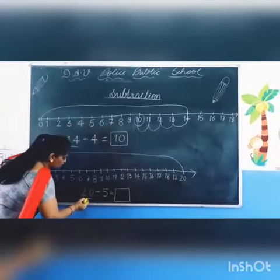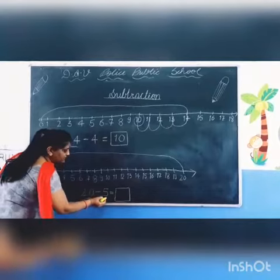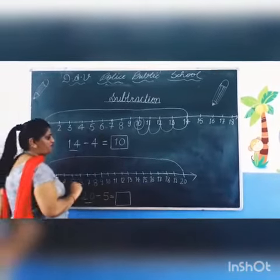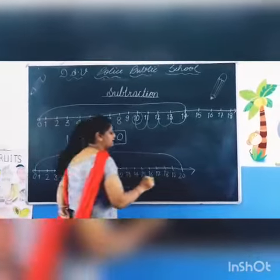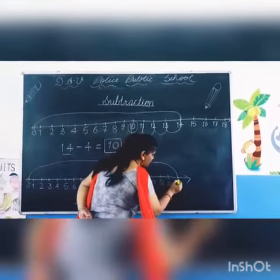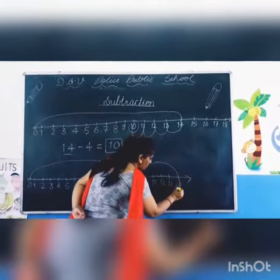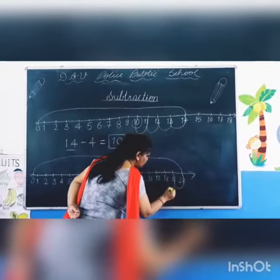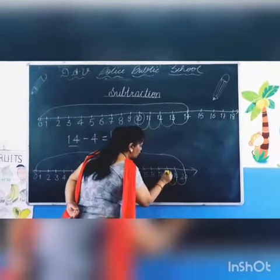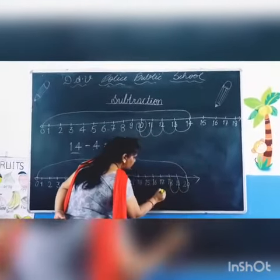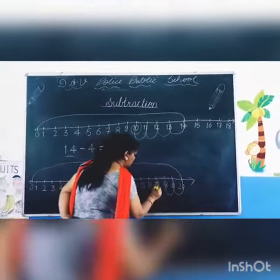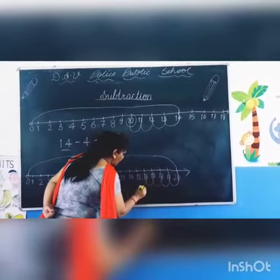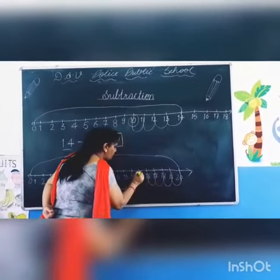20 minus 5. Back jump: 1, 2, 3, 4 and 5.